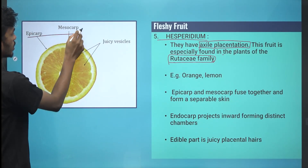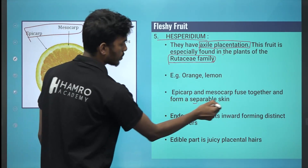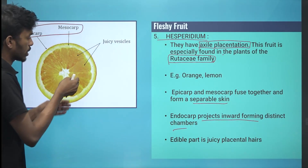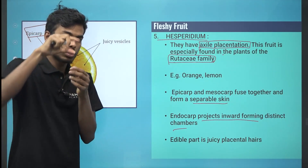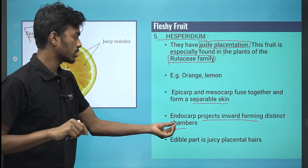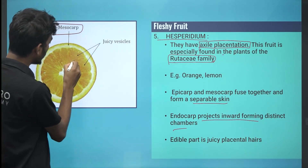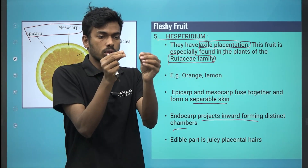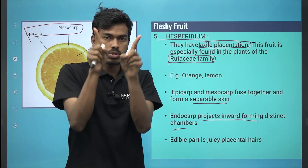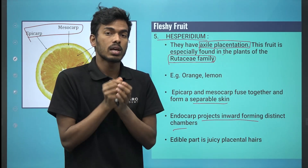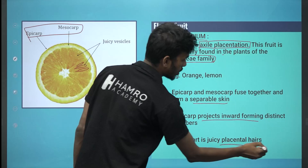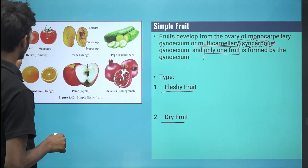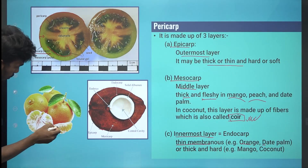These segments are separate from the skin. The endocarp projects inward forming distinct chambers. The edible part is the endocarp's fleshy, juicy hair. The endocarp is in the center chamber. This means the endocarp is intact, with juicy placental hair.